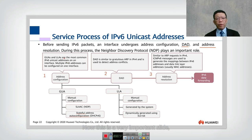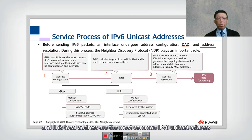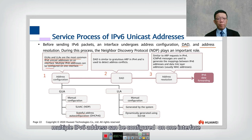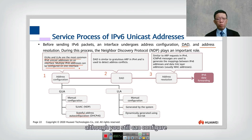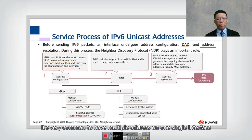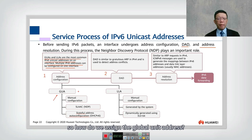This is a very important point. Global unique addresses and link-local addresses are the most common IPv6 unicast addresses on an interface. Multiple IPv6 addresses can be configured on one interface. In IPv4 we normally configure just one IP address, although secondary addresses are possible, but in IPv6 it is very common to have multiple addresses on a single interface.